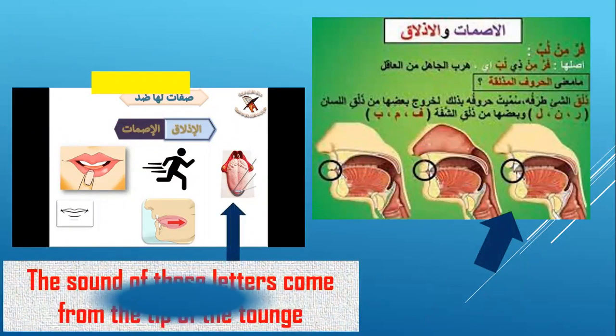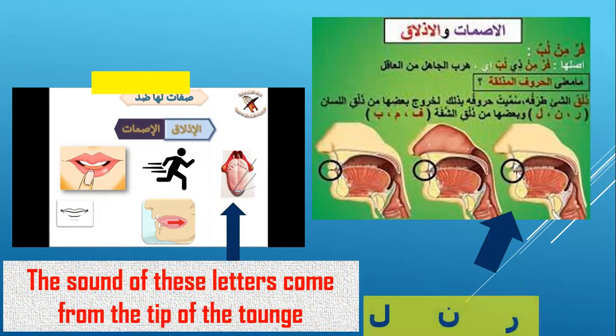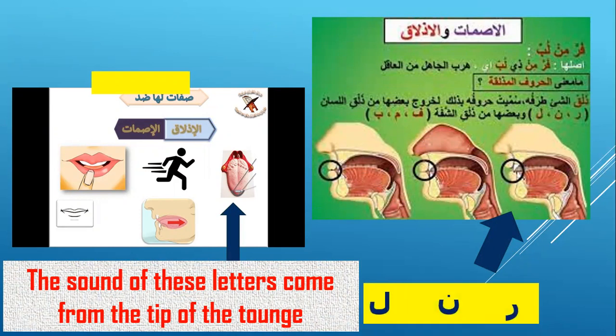The sound of some islaq letters comes from the tip of the tongue — letter ra, noon, and lam: ar, an, al.